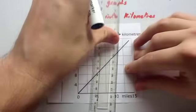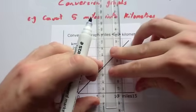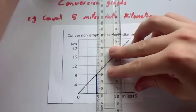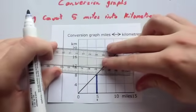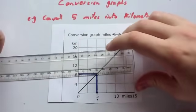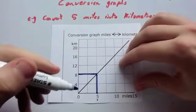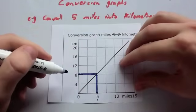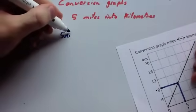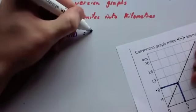So what you do is you get your ruler and you put it where five miles is here and you're going to go up to the line and then you're going to go across and then that will tell you your answer. So you can see here going up from five miles to kilometers would be eight kilometers. So five miles equals eight kilometers.